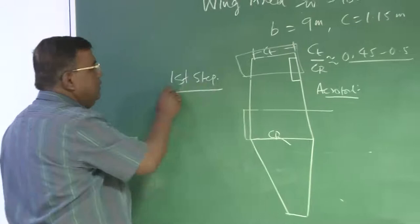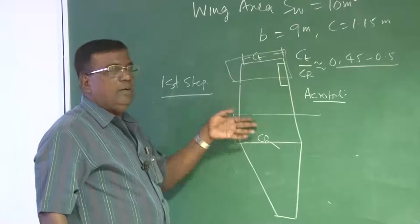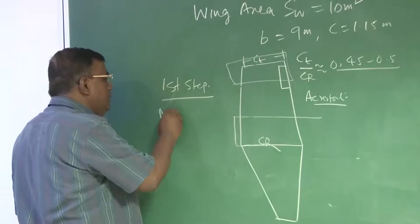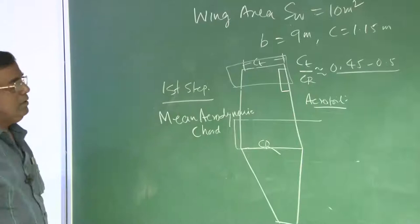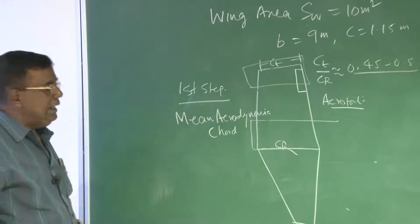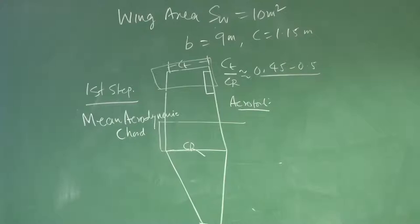We are talking about chord and span, but the moment I introduce a taper ratio, the question comes: which chord do I use, since chord is varying across the span? So we have to come back to the concept of mean aerodynamic chord, which we have already explained in earlier courses, but we will revise it and do a calculation. Also, wing is a subsystem of the airplane — a very important subsystem whose primary role is to generate lift.